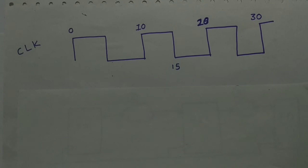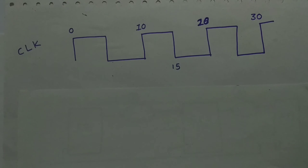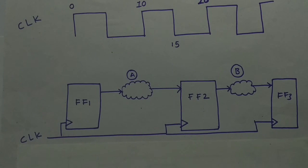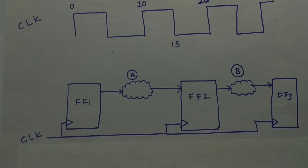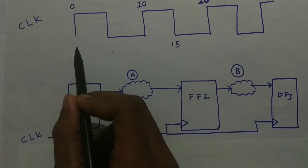Let us consider a clock of time period 10, so 0 to 10, 10 to 20, and 20 to 30. Now let us consider a register-to-register path in a design: flip-flop 1 to flip-flop 2 to flip-flop 3. In between the flops we have combinational logic A and B. Whatever data is launched at flip-flop 1, let us consider it's launched at 0.